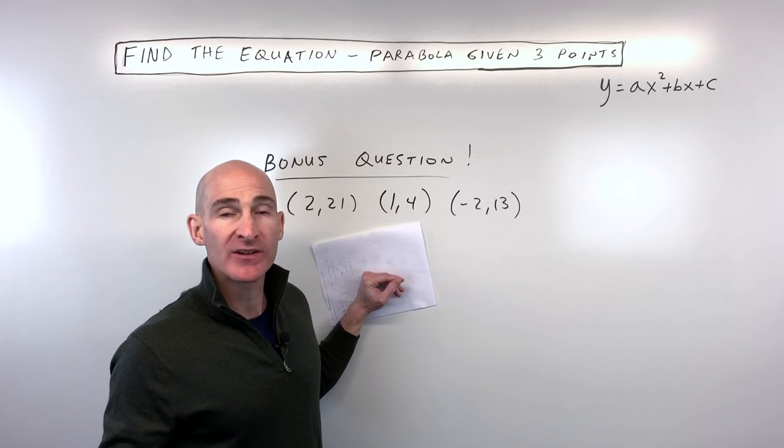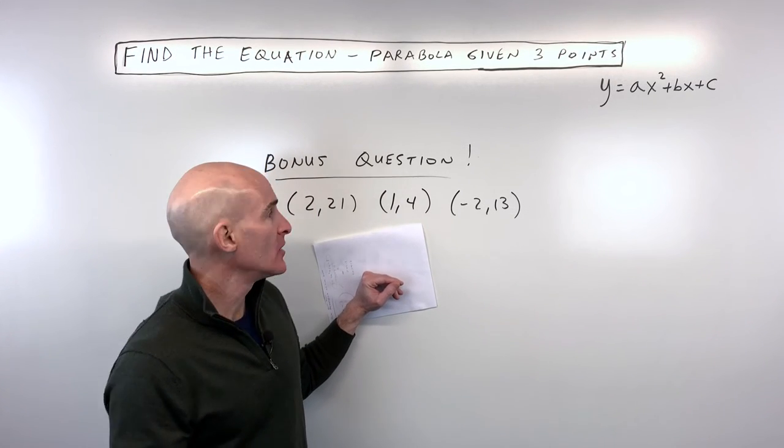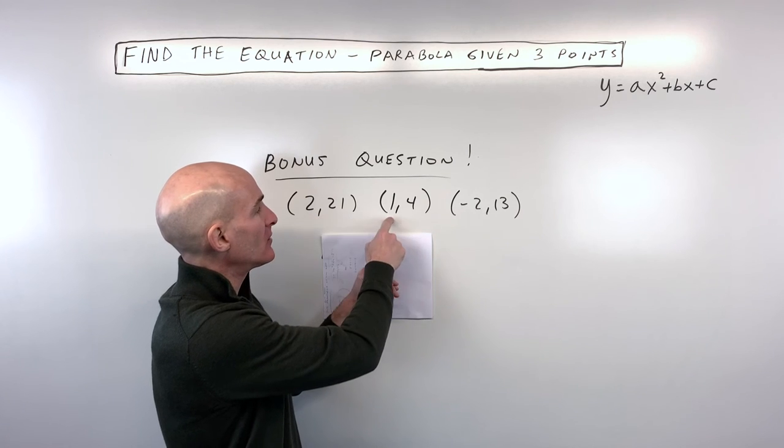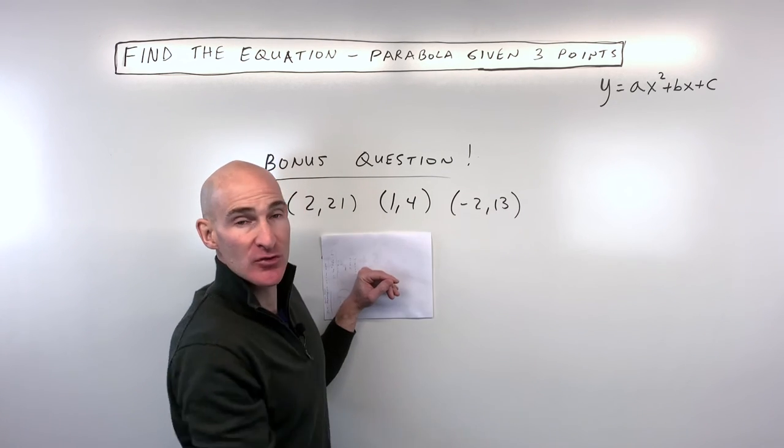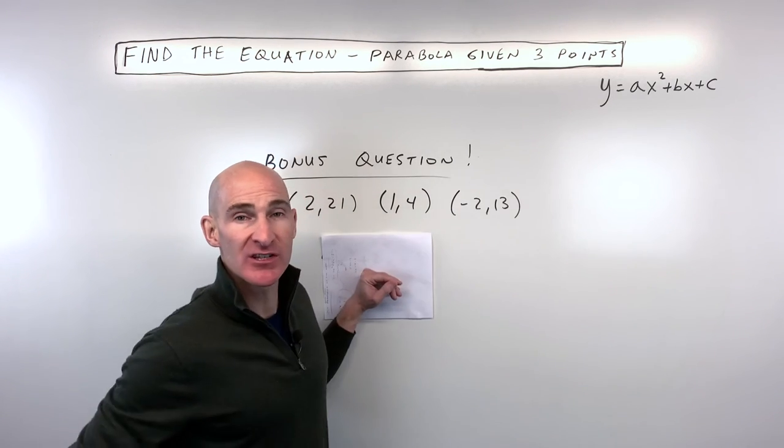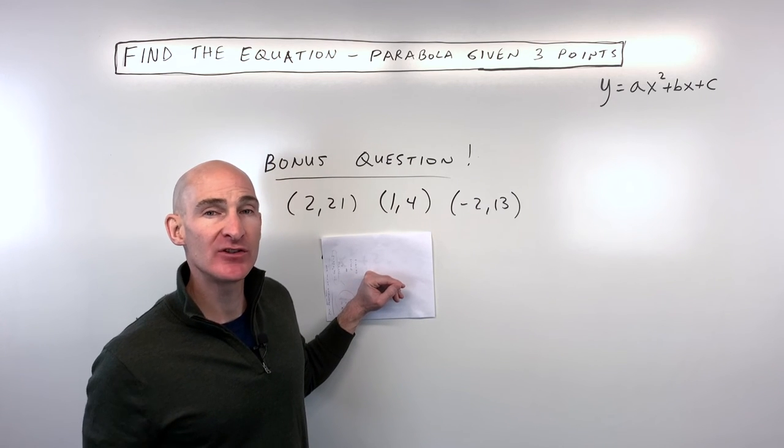Okay, if you'd like some more practice and you want to try one on your own, try this one where you have the points (2, 21), (1, 4), and (-2, 13). Go ahead and make your system of three variables, three equations. See if you can solve it.